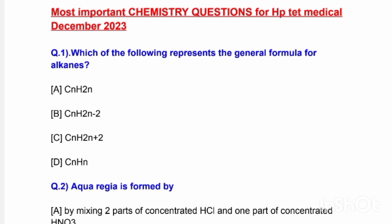Question number 1: Which of the following represents the general formula for alkanes? Options are CnH2n, CnH2n-2, and CnHn. The correct answer is option C, CnH2n+2.